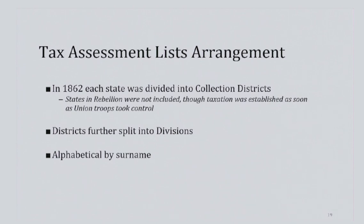This is the arrangement researchers will find the records in today: first by state, followed by district, and then by division. Divisions generally correspond to particular counties. From there, the records are arranged alphabetically by surname.